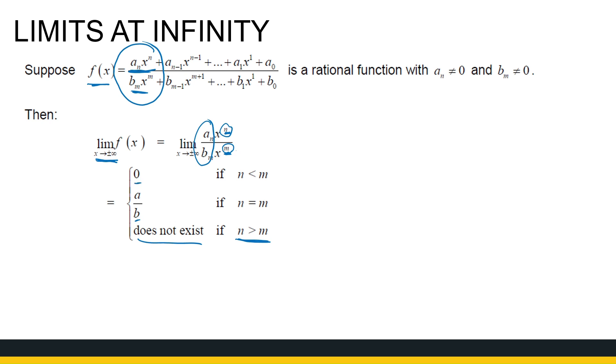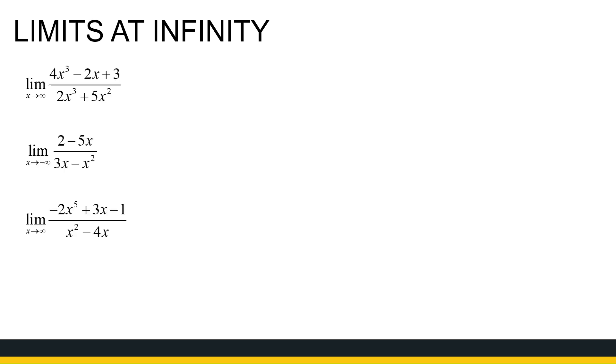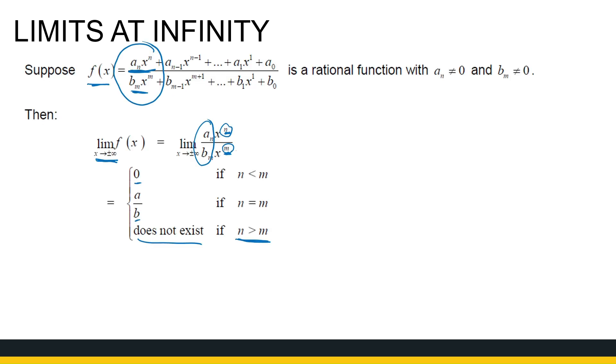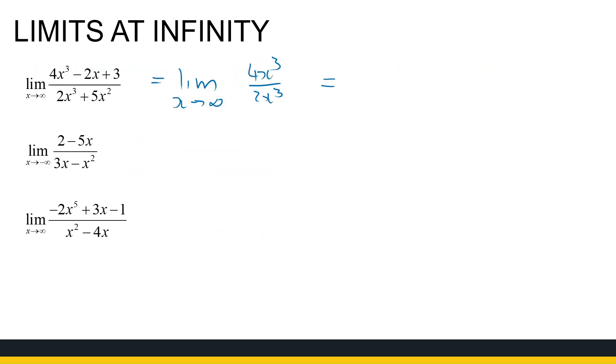So this is a shortcut - not algebraically done, but if you want a quick intuitive idea of where the limit goes, you can use this. We're going to use this now for these three examples. You can do it algebraically, but let's just see. This first one is going to behave exactly the same way as the limit as x goes to infinity of 4x cubed over 2x cubed. The numerator and denominator have the same degree, so this will just tend to 4 over 2, which is 2.